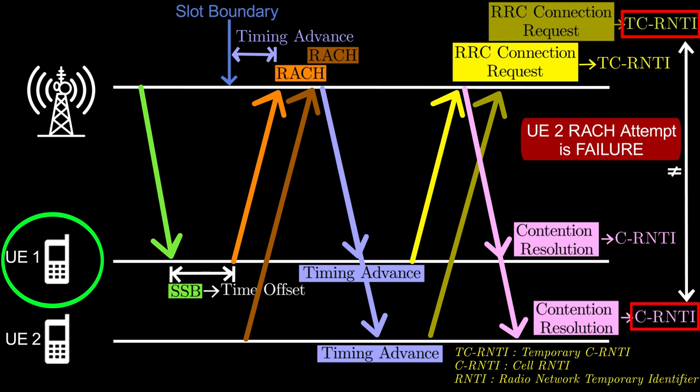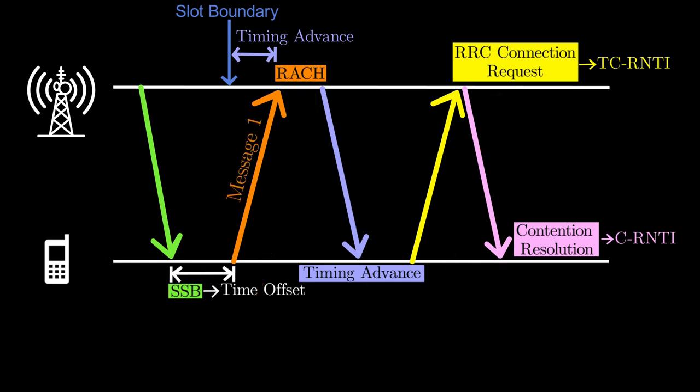As a side note, these messages between UE and base station are generally called message 1, message 2, message 3, and message 4, respectively.